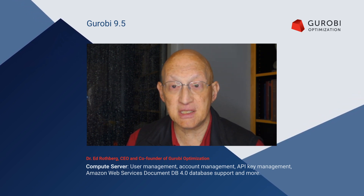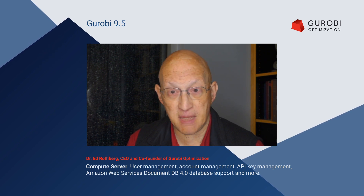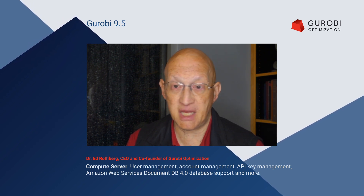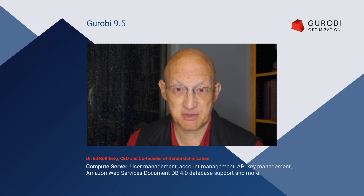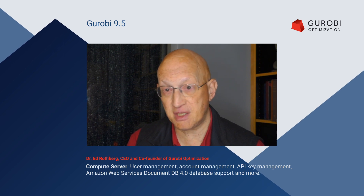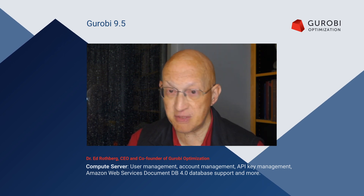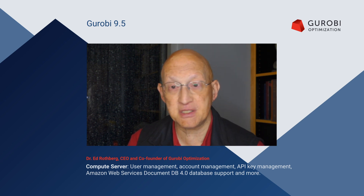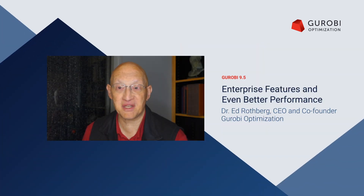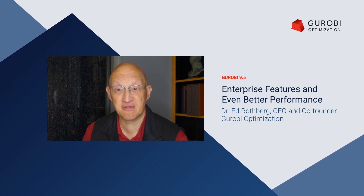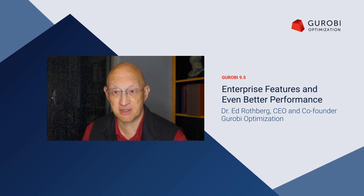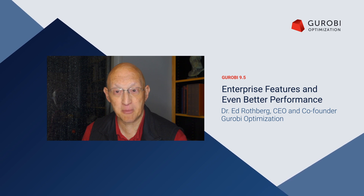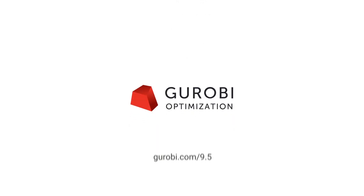Another thing we've added is better support for API key management. You can now give descriptions to API keys, which will be stored when you use them. This makes it easier to keep track of which API keys are being used, how they're being used, and just to manage API keys in general. That was just a quick overview of all the things new in version 9.5. I encourage you to visit our website, browse the full list of features, download the product, and look at the documentation. We're quite proud of what we've put in version 9.5 and we think you'll be pleased with it.